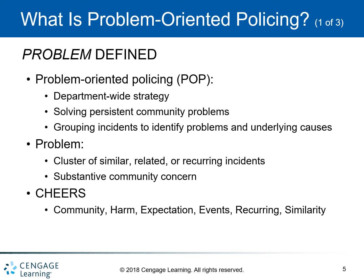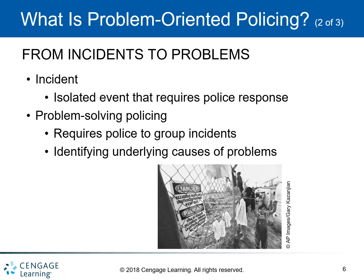The primary work unit in the professional model is the incident — that is, an isolated event that requires a police response. In 1990, Goldstein criticized the professional model of policing as being incident-driven and suggests that a more productive response to problems would be to identify and respond to why incidents occur to begin with.